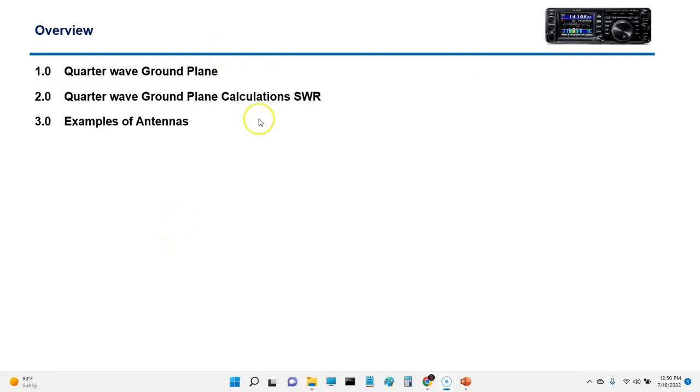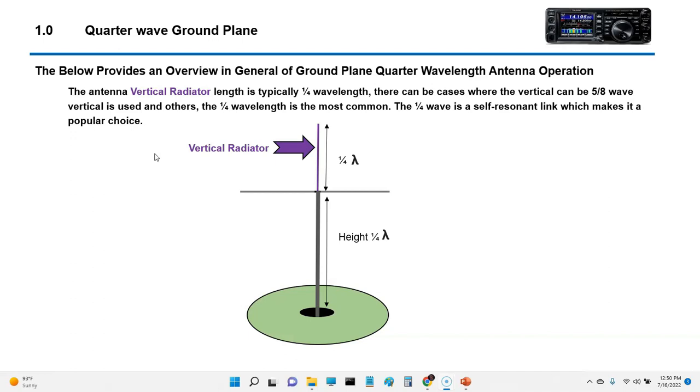I want to go over the quarter wave antennas, some SWR calculations, and a quick look at some of the examples of some of the antennas. The quarter wave antenna has a vertical radiator. This length is typically a quarter wave. And then there can be cases where the vertical can be five eighths and other combinations, typically not more than a five eighths wave. And there's a reason for that. The quarter wave is the most common and it is a resonant length, which makes it a popular choice. This is the radiator right here that you see right here.